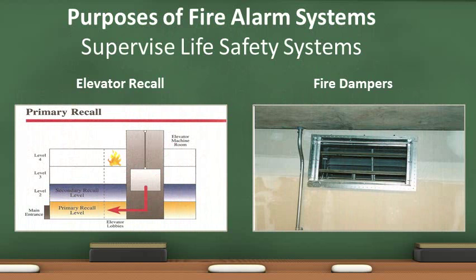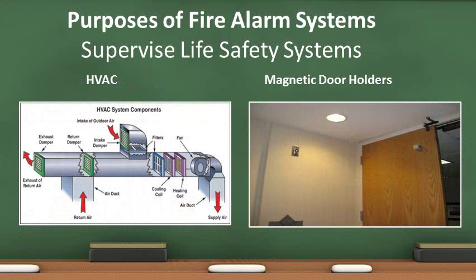Fire alarm systems supervise life safety systems, such as elevator recall, smoke, and fire dampers. Fire alarm systems supervise HVAC systems and may shut down smoke dampers or shut down an entire HVAC system, depending on system design. Alarm systems also supervise magnetic door hold-open devices and magnetic locks. When the alarm system is activated, the door hold-open devices release and magnetic locks unlock.